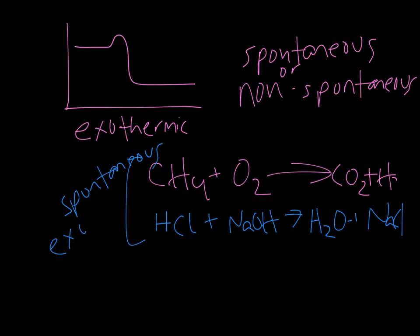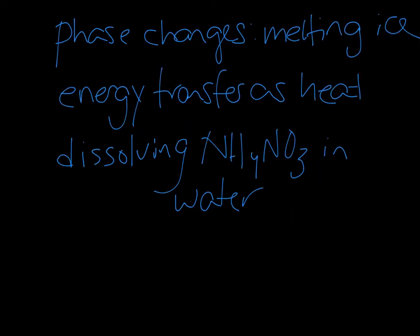These things happen without us having to do anything special. We put them together and they react, so they are spontaneous processes. They are also exothermic. This is a graph of an exothermic process. We have our reactants here, our products here, energy is released. So we could think that all exothermic processes might be spontaneous. Let's consider that a little bit further. We're going to look at these three processes: melting ice, melting is a phase change that is spontaneous.